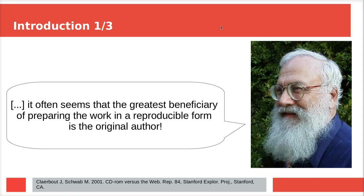In the introduction, the paper uses three examples. The first is John Claerbout, who was the first to care about reproducible science. He wrote that it often seems the greatest beneficiary of preparing work in a reproducible form is the original author. When we as scientists do analyses that are too complex, we tend to forget what we did in all those steps. He says especially right after publishing your paper, you benefit most if you want to redo or extend the analysis, because only then do you know exactly what you did.